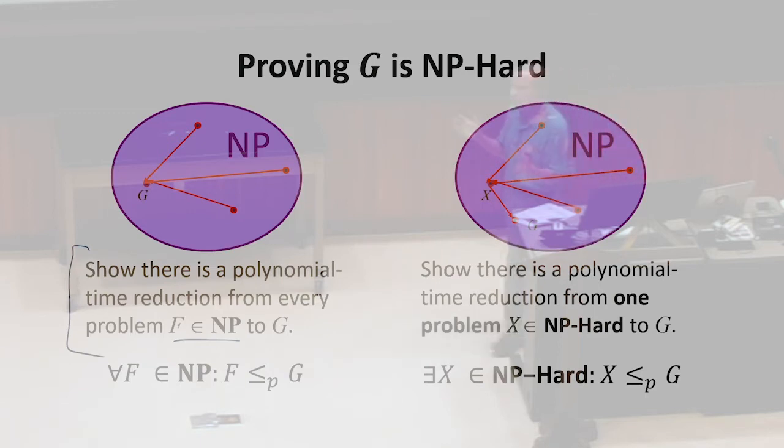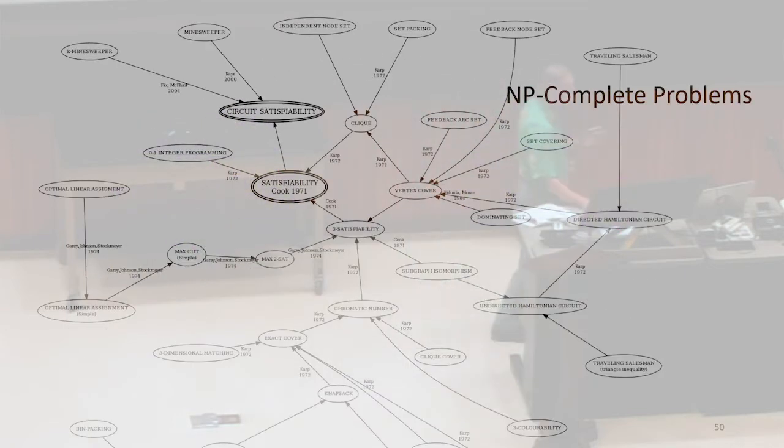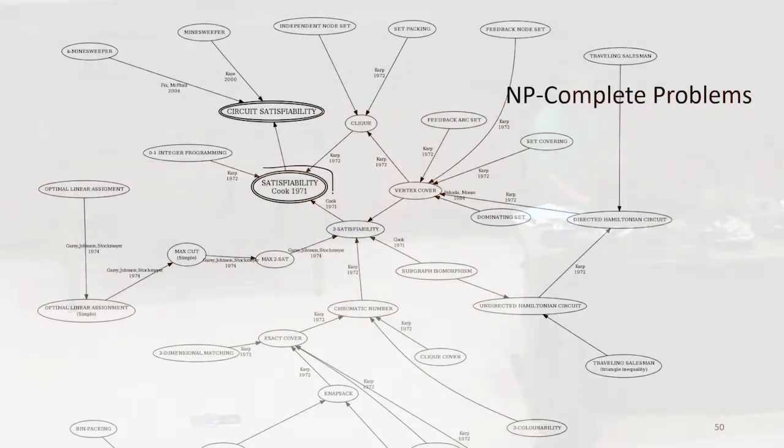And as you learn about more problems that are NP-hard, you have more and more options for how to do this proof. And there are lots and lots of them. So this is just a small subgraph of all the reduction proofs that have been done to show problems are NP-hard. Satisfiability is the one that's in the middle here.